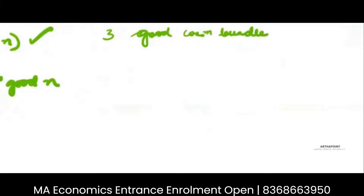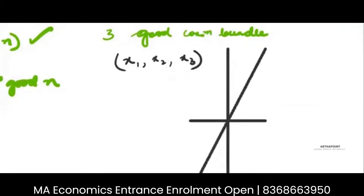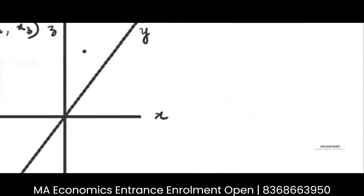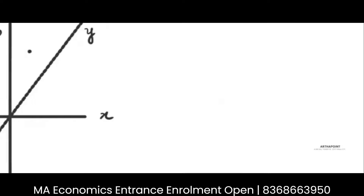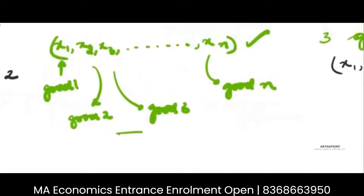If I talk about a consumption bundle x1, x2, x3 and ask how you would plot it, ideally the plotting would be across three axes — a 3D diagram with an x-axis, y-axis, and z-axis. Any bundle would represent how much of goods one, two, and three I am consuming. Now imagine when you talk about an n-good consumption bundle — that becomes very difficult to plot.